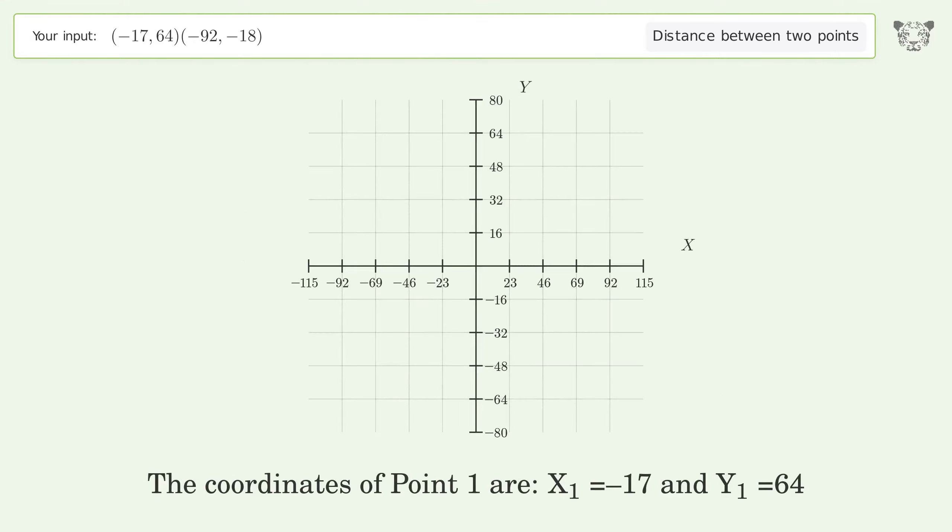The coordinates of point 1 are x1 equals negative 17 and y1 equals 64. The coordinates of point 2 are x2 equals negative 92 and y2 equals negative 18.